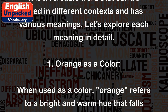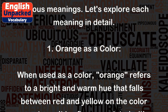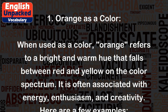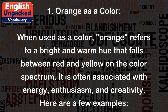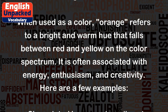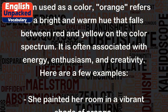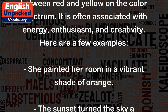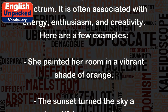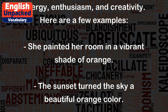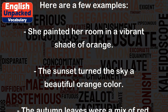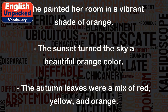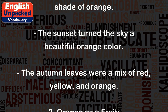1. Orange as a color. When used as a color, orange refers to a bright and warm hue that falls between red and yellow on the color spectrum. It is often associated with energy, enthusiasm, and creativity. Here are a few examples. She painted her room in a vibrant shade of orange.